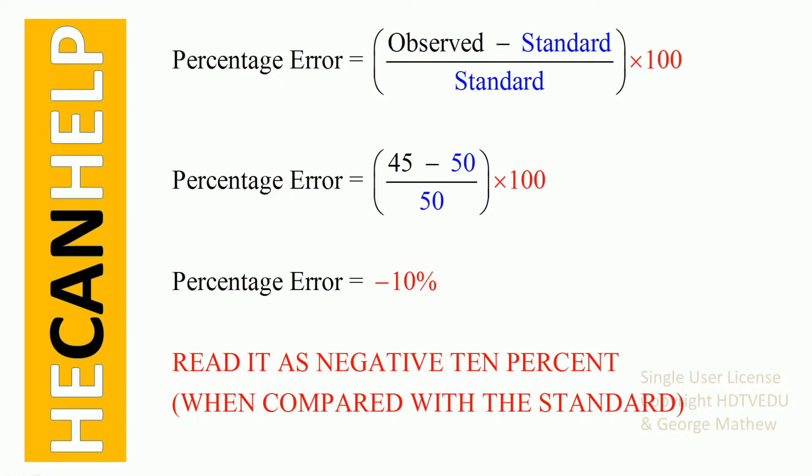Let us say we are in the process of manufacturing some items and we would like to know if the nuts that we manufacture have a bigger or smaller radius compared to the standard. As a manufacturer, your goal is to have no percentage error — zero percent error.